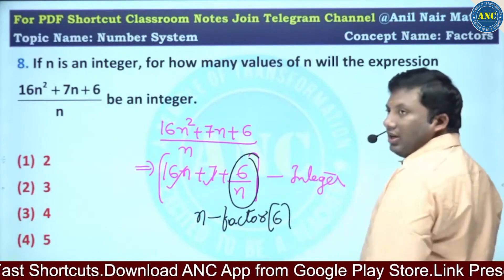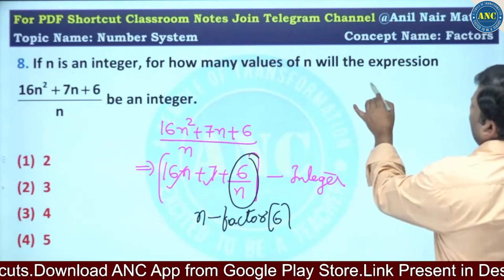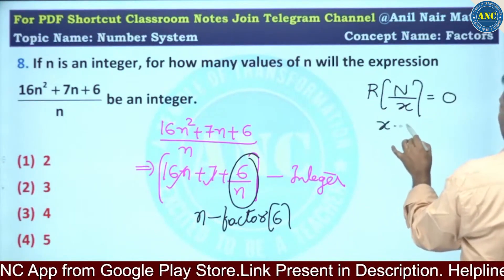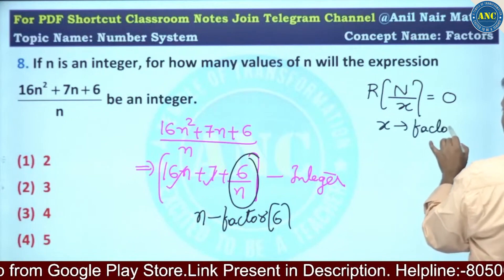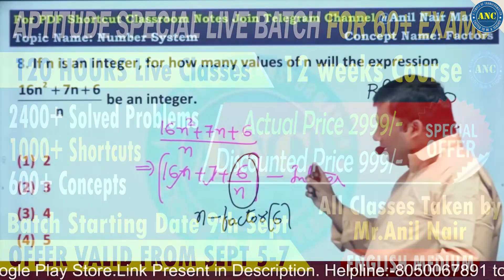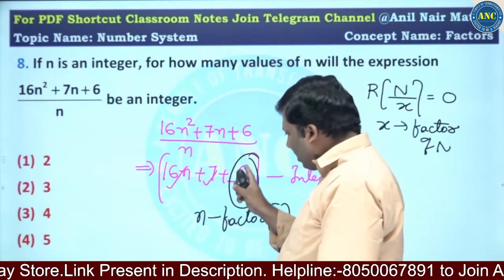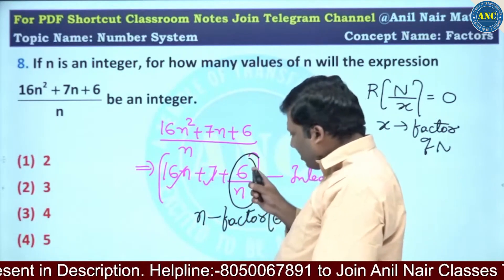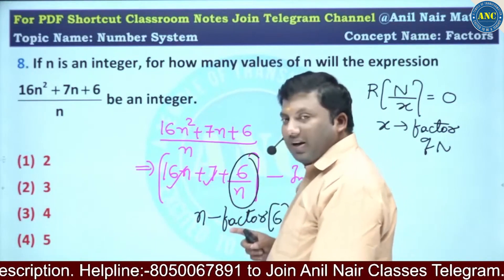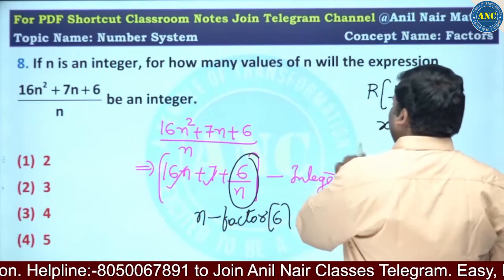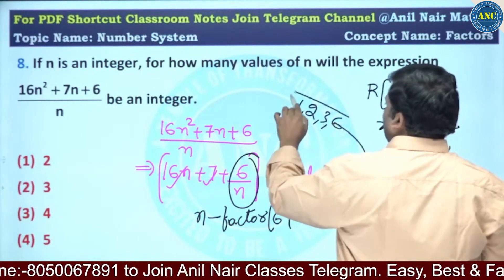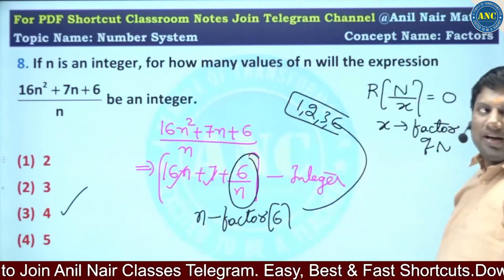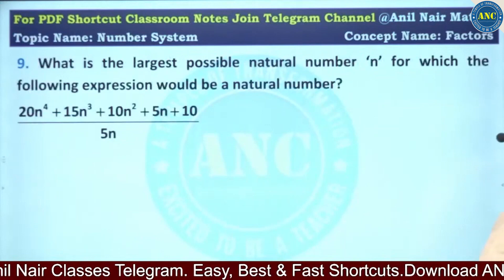This is a definition-based question. If n divides 6, then 6/n is an integer. If n does not divide 6 — for example, 6/5 or 6/7 — we get a decimal. The factors of 6 are 1, 2, 3, and 6. So n can take 4 values such that the expression is an integer. The answer is 4.